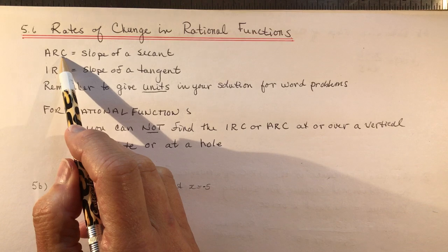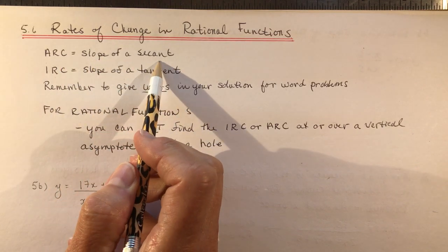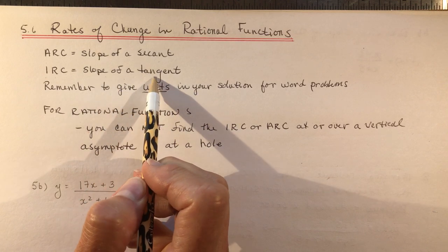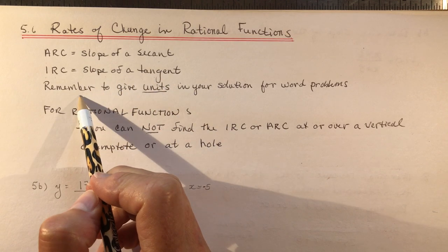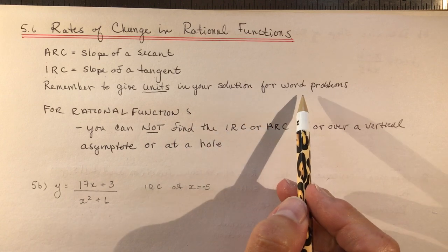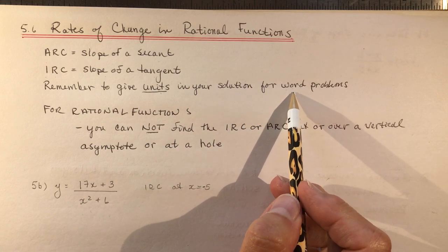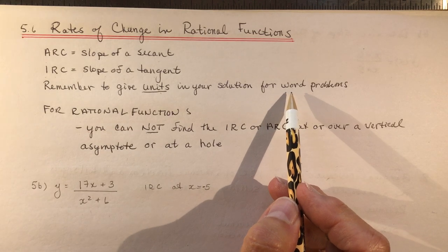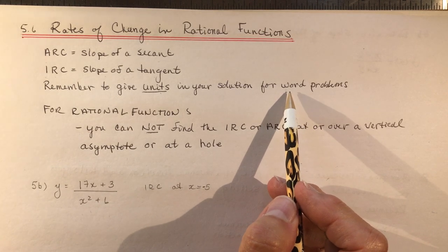Average rate of change we've talked about before is the slope of a secant. The instantaneous rate of change is the slope of a tangent. Remember to give units in your solution for word problems. If you're finding the instantaneous rate of change and it's not a word problem, you're simply finding the slope.